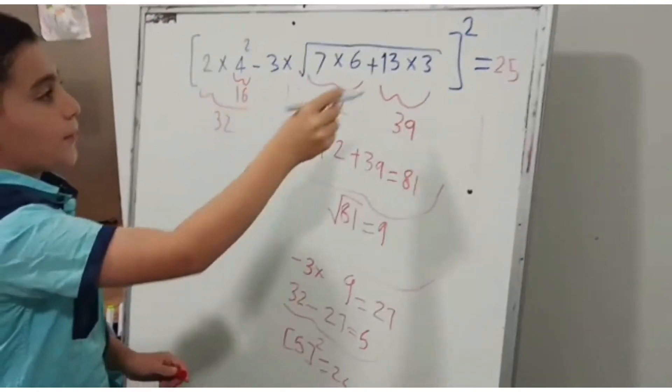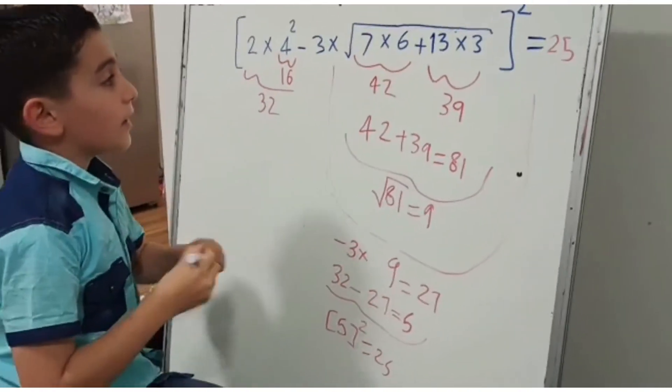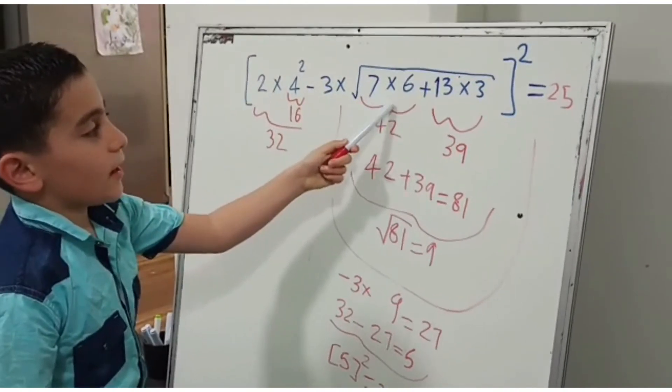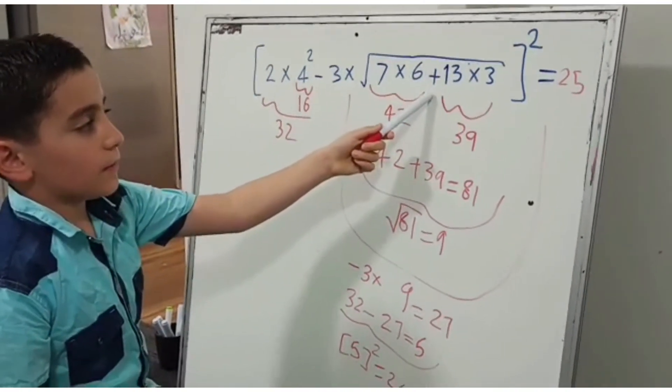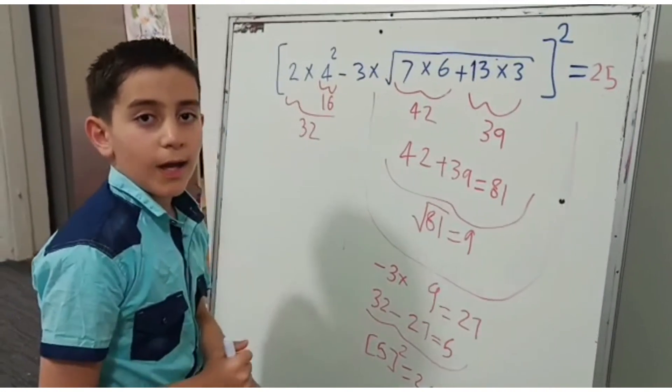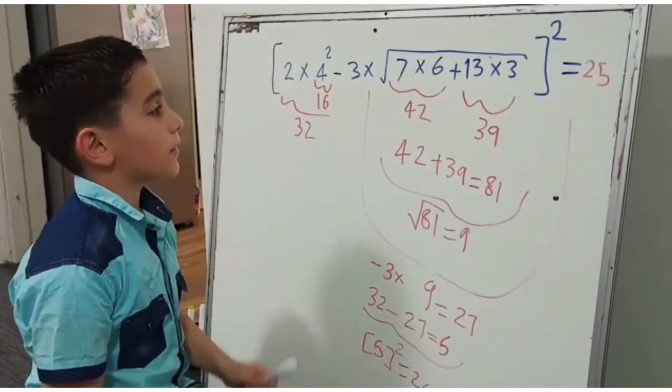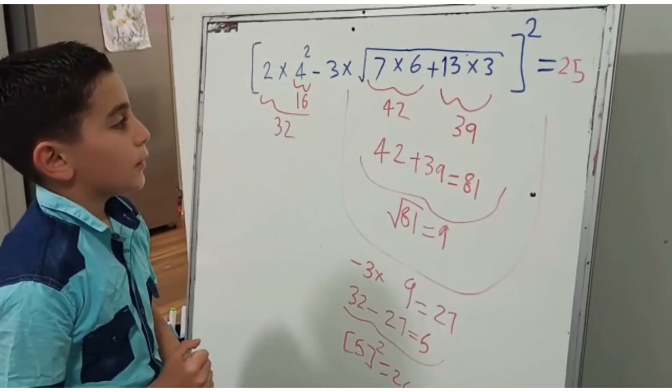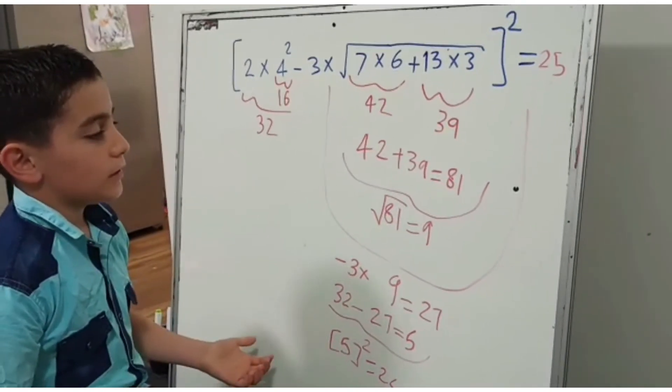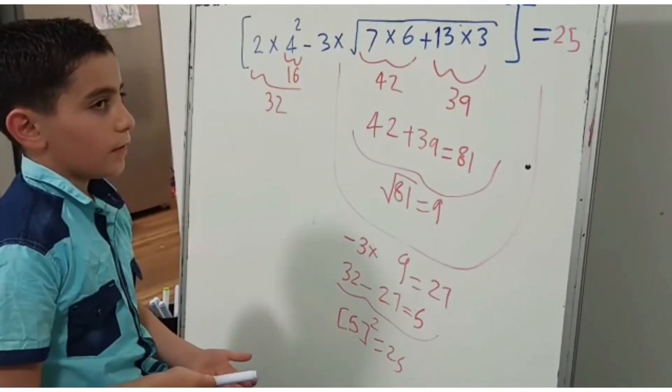So the answer for this operation is 25. Do you know that times is stronger than plus? So always use times before plus, because it can help you to do the question correct.